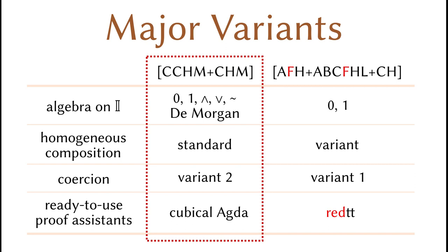There are many variants of cubical type theory, and we are still experimenting with different configurations. This table is a simple summary of the two most developed variants. Within each of them, there are still many choices you can make, and it is unclear which combination is the best. In any case, the first major variant has De Morgan algebra on the interval, and it is a bounded distributed lattice with an involution that satisfies the De Morgan laws. The involution is written as the tilde in Agda.